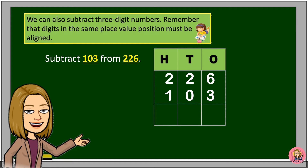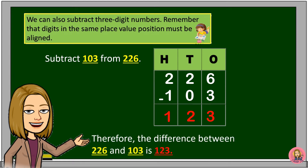First, we will subtract 3 from 6. So, 6 minus 3 is equal to 3. Then, 2 minus 0 is equal to 2. And 2 minus 1 is equal to 1. Therefore, the difference between 226 and 103 is 123.